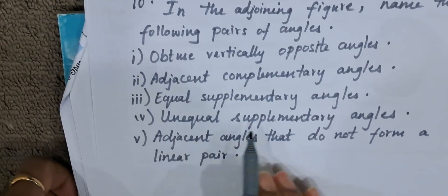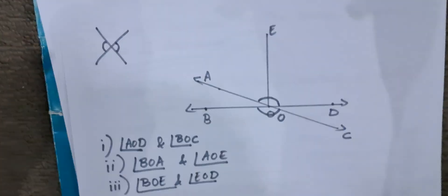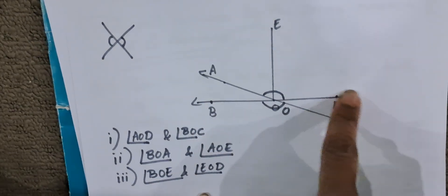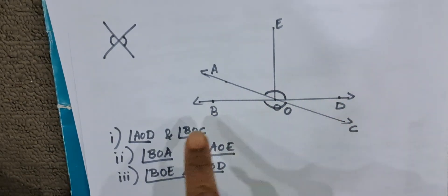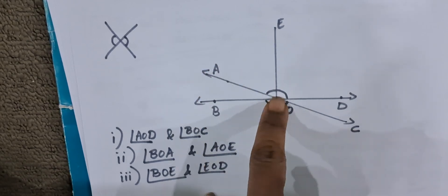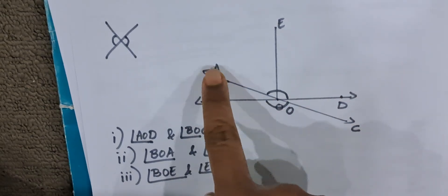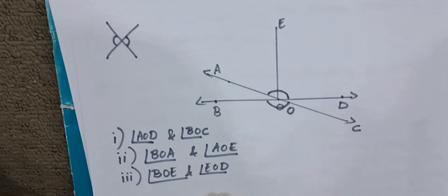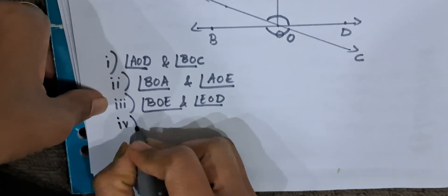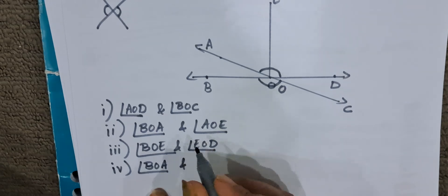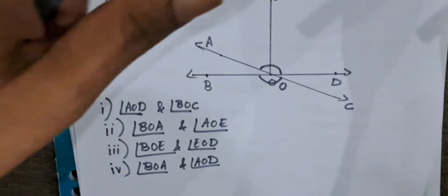The fourth part asks for unequal supplementary angles — two angles that form 180 degrees but are not equal. BOD is a straight line of 180 degrees. BOA is a small acute angle and AOD is an obtuse angle. So BOA and AOD are two unequal angles that are also supplementary, since they add up to 180 degrees. Both conditions are satisfied: angle BOA and angle AOD.